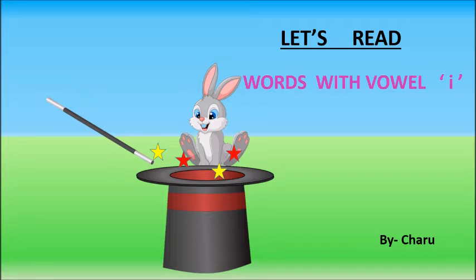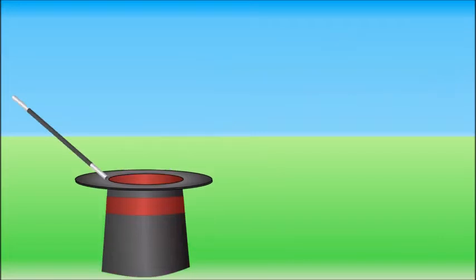Hello children, today we are going to read words with vowel I. Ready to read words with me? Okay, so let us start. This is a magic hat and a word will come out when you say magic words which are abracadabra gilly gilly choo.